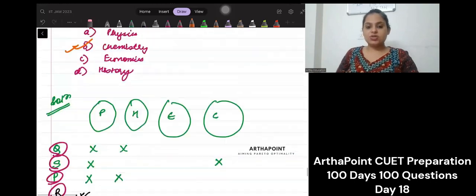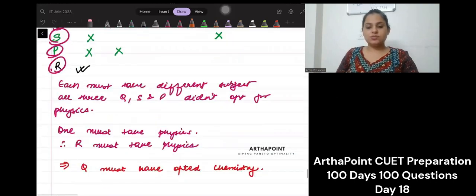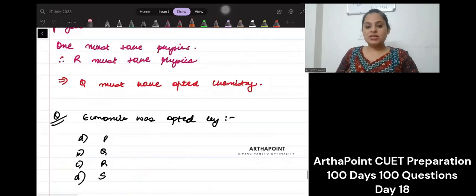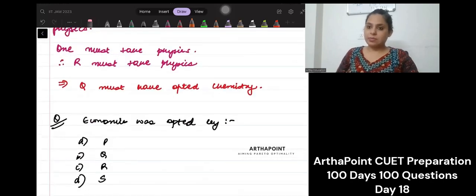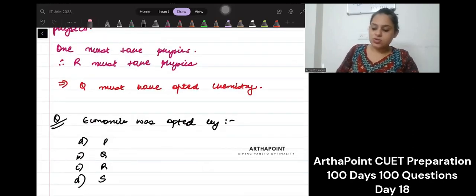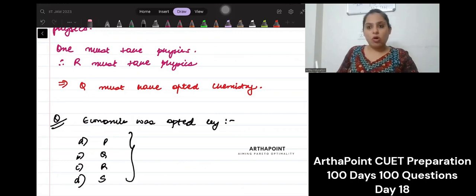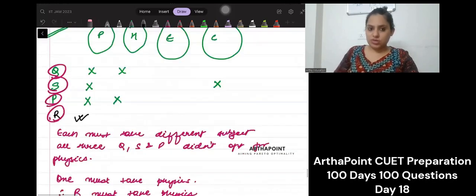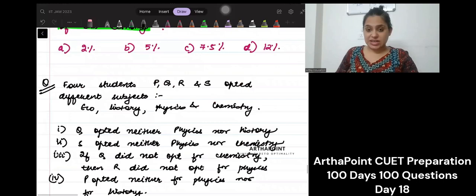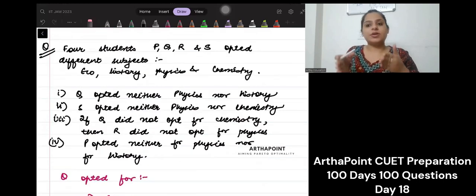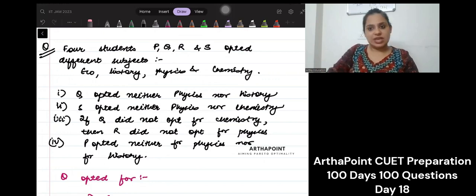Now I am leaving it to you to solve this question. Economics was opted by. There are four options. Pause your video. Go through this again. Read this content. And then you tell me who opted for economics and answer this in the comment section below. I will check your answers and tell you whether it is correct or not. Thank you. Let's meet tomorrow again in the next class.